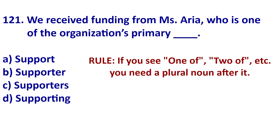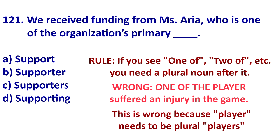All right, this question is actually quite easy. If you see 'one of,' 'two of,' 'five of,' the noun following it must be plural. Here's an example of a wrong sentence: 'One of the player suffered an injury in the game.' This is wrong because 'player' is singular. The correct version: 'One of the players suffered an injury in the game.'